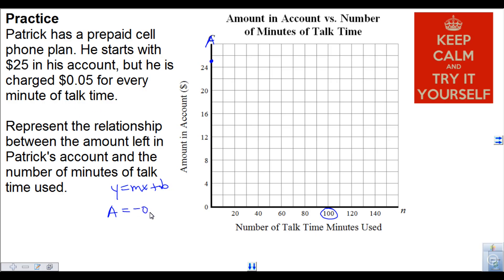Negative 0.05 times 100, that's negative 5 plus 25, so the amount at that point would be $20.